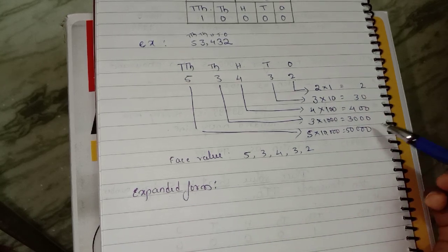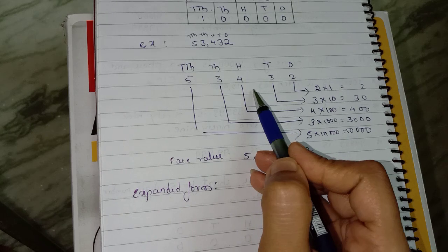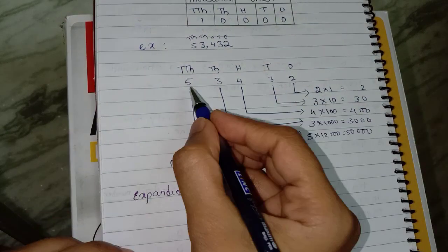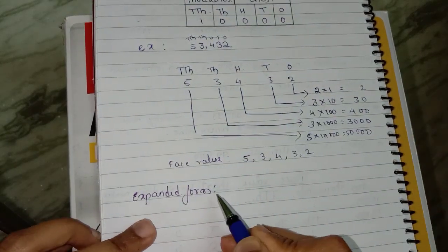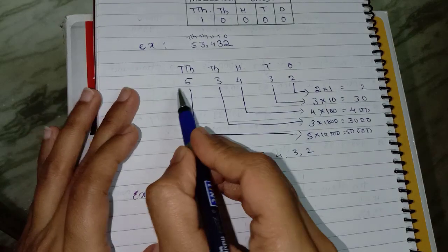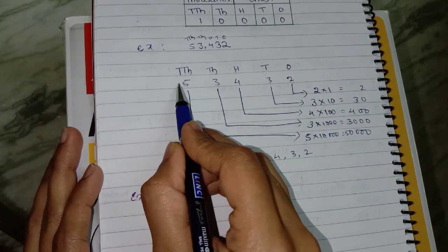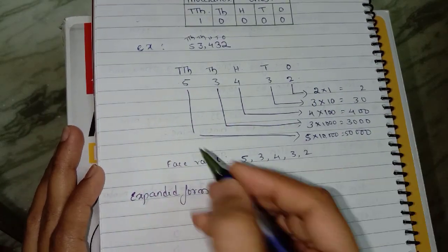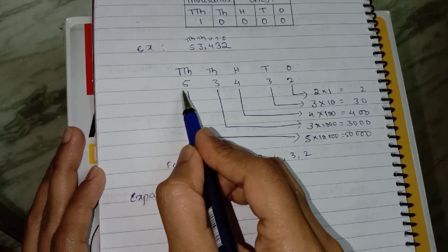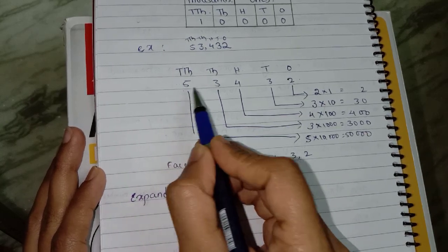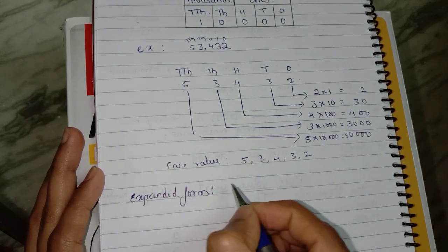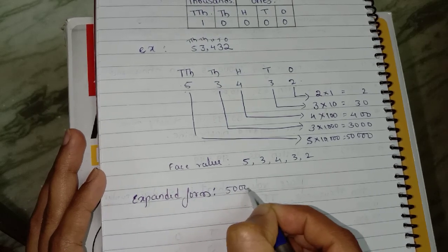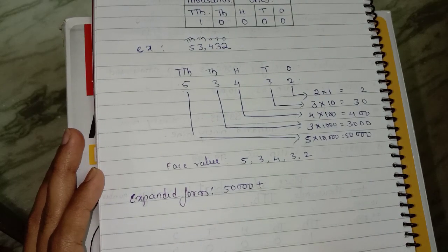We already know what expanded form is. Expanded form is the addition of the place values of all the digits present in the number. In expanded form we will start from the left side. The first digit is 5 and its place value is 50,000.